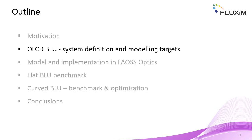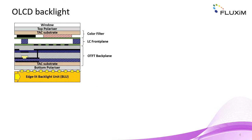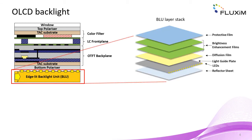Let's start with a brief review of OLCD backlight units. In the OLCD technology, the brightness is provided by a backlight unit that illuminates the OLCD stack from the rear side. Here, we consider the common case of an edge-lit backlight unit where light from an LED is coupled into the backlight from the side and exits towards the OLCD stack at the top. In addition to the light guide plate with side-emitting LEDs, a standard OLCD backlight unit contains a bottom reflector sheet, a diffusion film, as well as one or several brightness enhancement films.